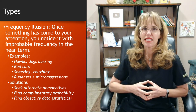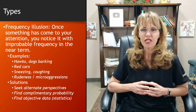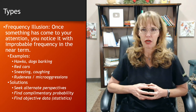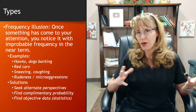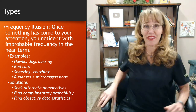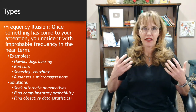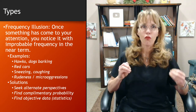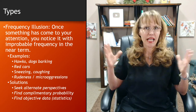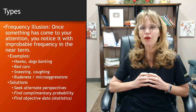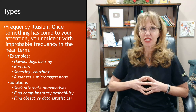The frequency illusion is another type of availability bias. Once something has come into your attention, you often notice it with improbable frequency in the near term. For example, we used to have chickens on complete free roam in the yard and we would lose a lot to hawks. After a hawk attack, I would become more aware of the hawk's calls and it would seem a lot more frequent than it actually happened.